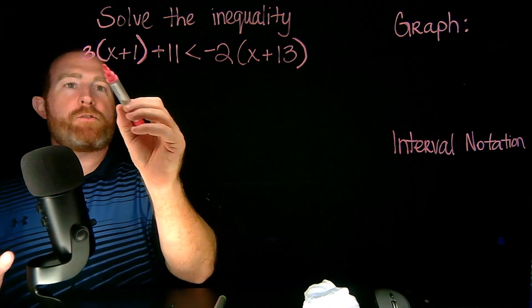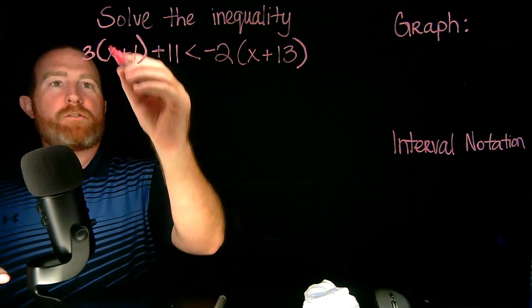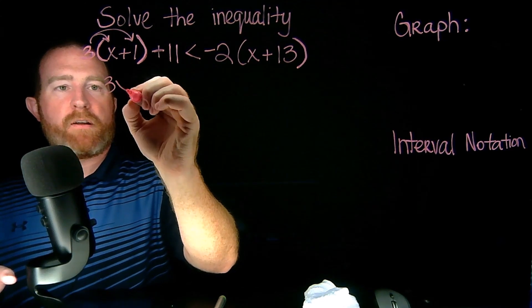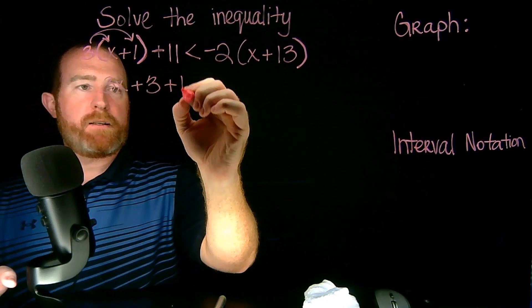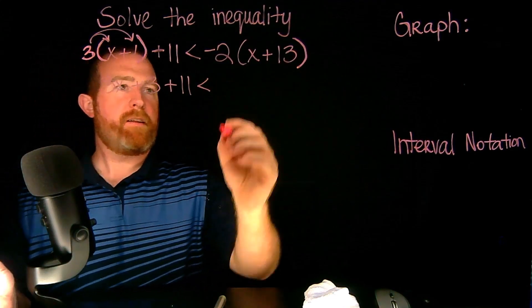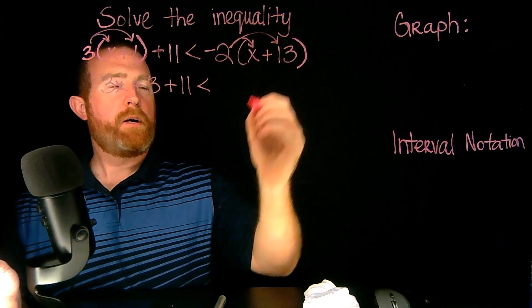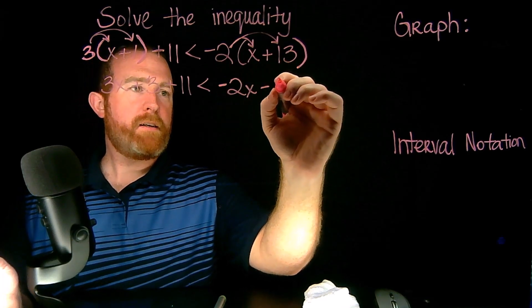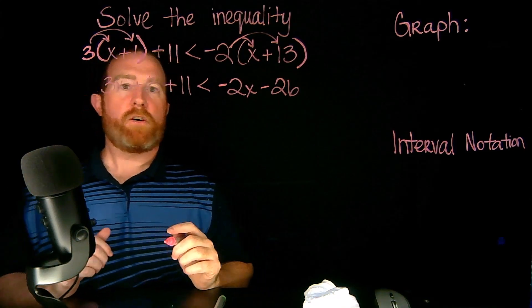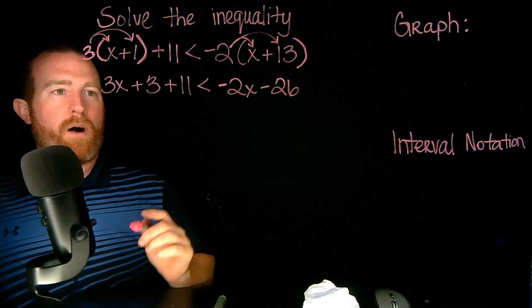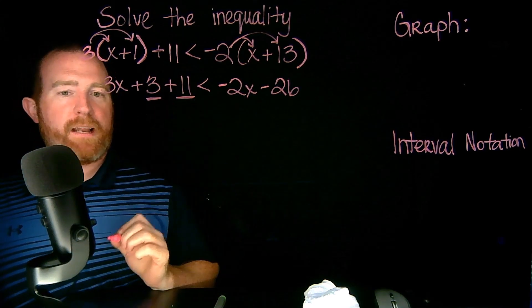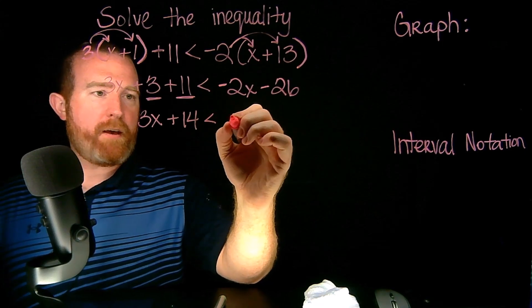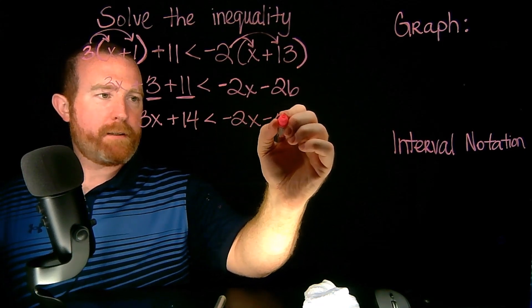For the next example, just like before, we need to distribute and then combine our X's. The 3 will go to the X and also to the 1, giving me 3X plus 3 plus 11 is less than. My negative 2 will go to the X and also to the 13, so I have negative 2X minus 26. Combining the constants 3 and 11 gives me 14, so I have 3X plus 14 is less than negative 2X minus 26.